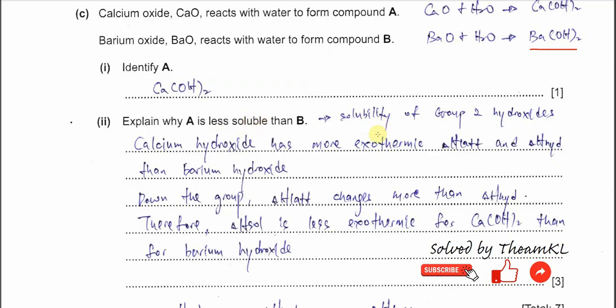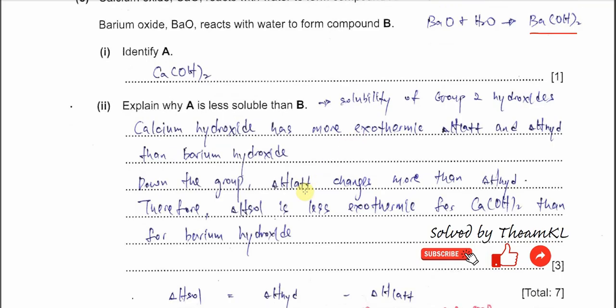Now explain why compound A — calcium hydroxide — is less soluble than compound B. This is about the solubility of Group 2 hydroxides. The ordinary explanation is that going down the group, both hydration enthalpy and lattice energy decrease — both become less exothermic — but we need to mention which one changes more. The lattice energy changes more, so the enthalpy of solution down the group becomes more exothermic.